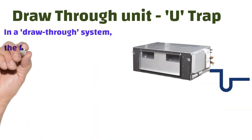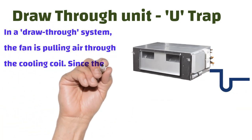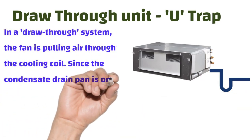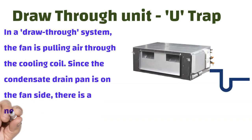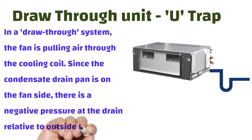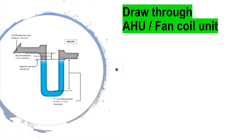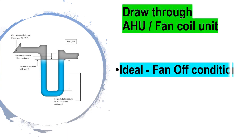U-trap at draw-through unit: in a draw-through system, the fan is pulling air through the cooling coil. Since the condensate drain pan is on the fan side, there is a negative pressure at the drain relative to outside the unit. First, we look into the U-trap for the draw-through unit.